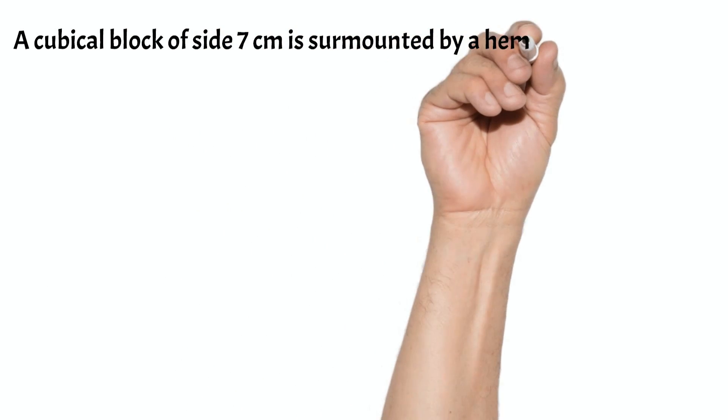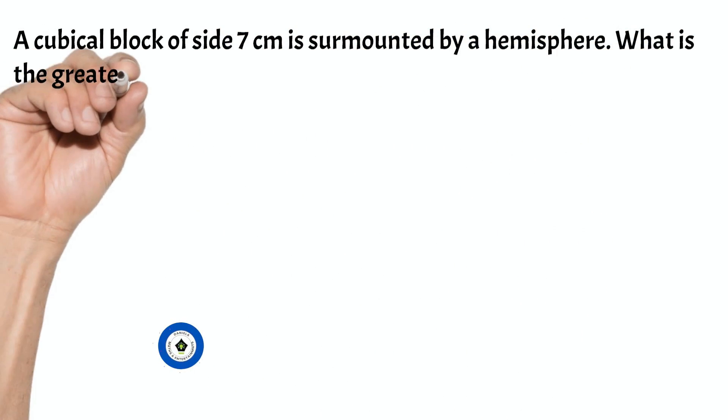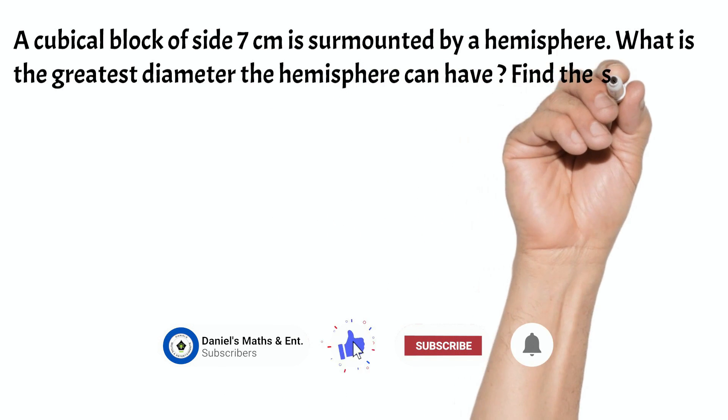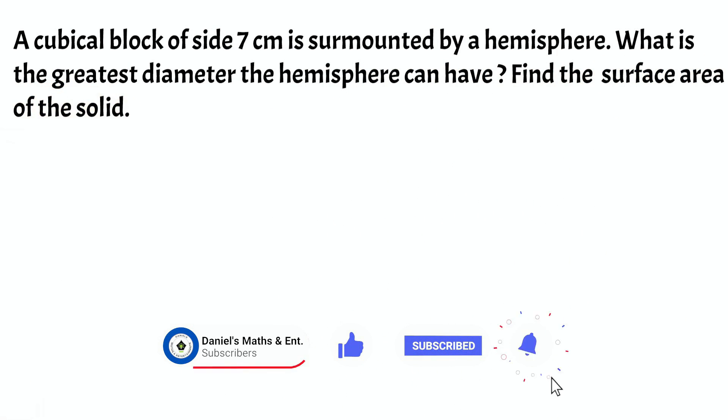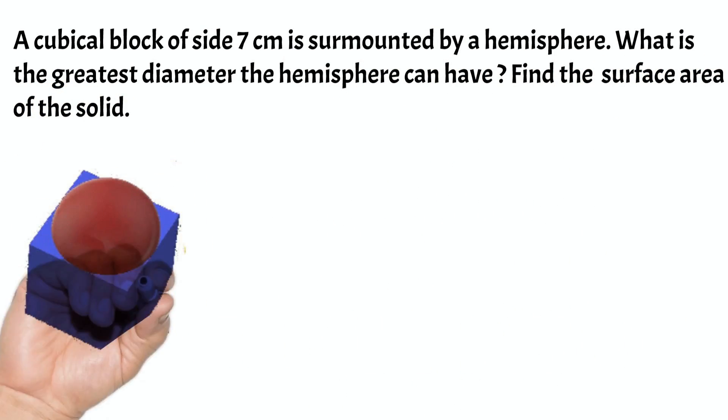A cubical block of side 7 cm is surmounted by a hemisphere. What is the greatest diameter the hemisphere can have? Find the surface area of the solid.